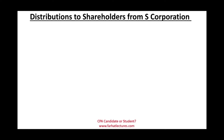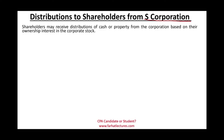Welcome to the session in which we will discuss distribution to shareholders from S-Corporation. Shareholders receive distributions — maybe cash or property — from the corporation based on their ownership interest in the corporate stock. The corporation generates a profit, revenues minus expenses, and at some point distributes some of that money or property to shareholders. The question is: how do we treat those distributions?